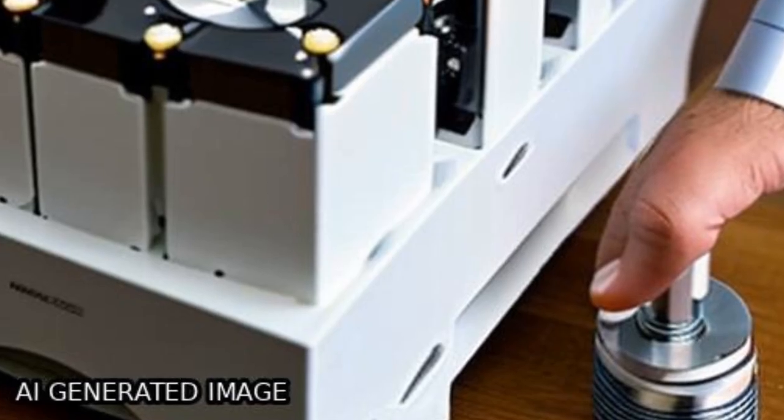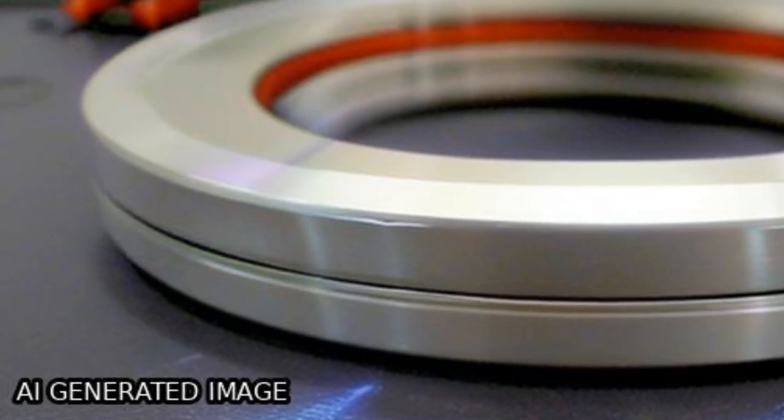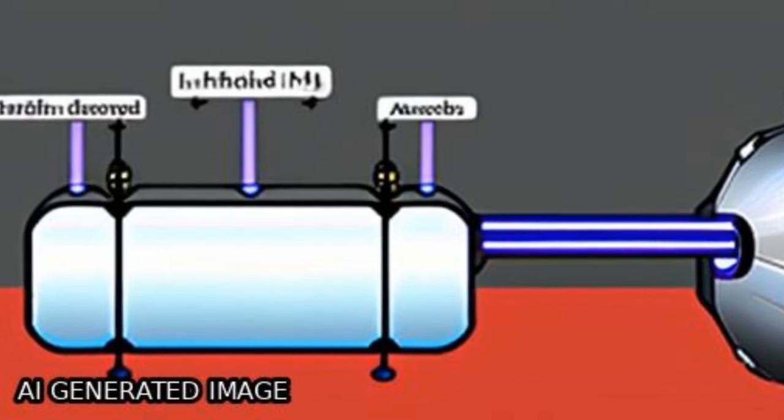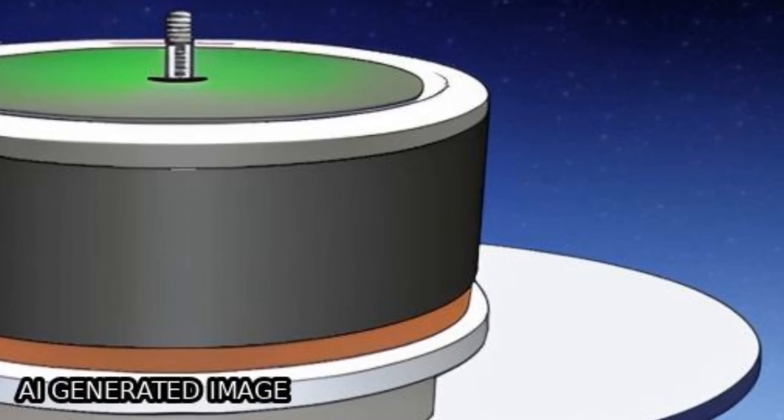A two-dimensional analytical model of single-sided ironless PMLSM based on Halbach array is established using linear overlay method and the no-load air gap magnetic field is calculated firstly.